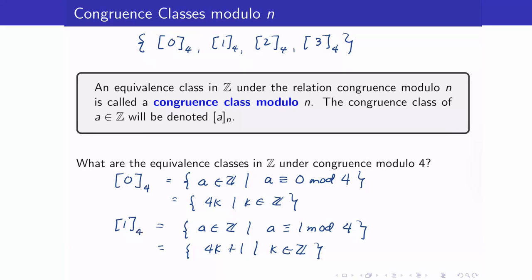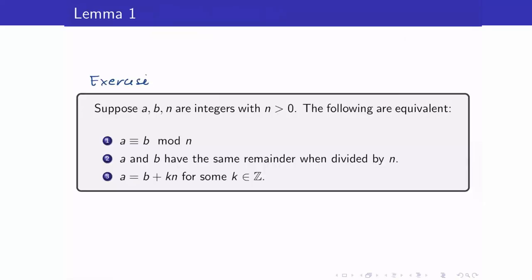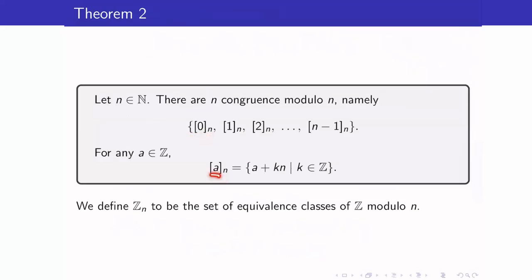This set of equivalence classes makes a partition of Z. In general, for congruence modulo n, the set of equivalence classes will always run from 0, 1, up to n minus 1. That result follows from the lemma: when dividing by n, the remainders can only be 0, 1, up to n minus 1. Note that we are assuming here that n is positive. Each equivalence class looks like the representative plus a multiple of n.